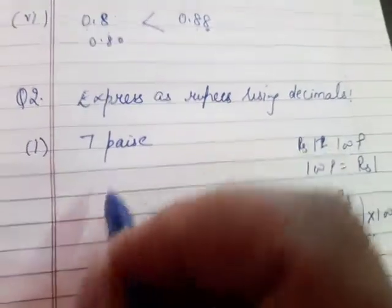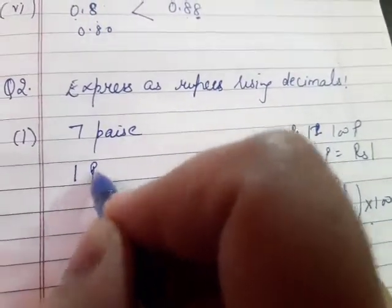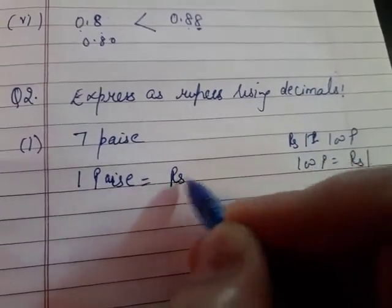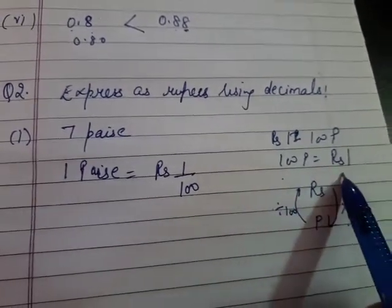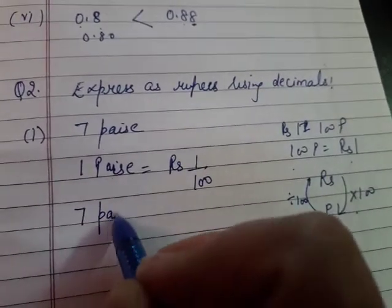So here is seven payasas. So one rupee has one hundred payasas. One payasas me kitne rupees honge? That is one by hundred. One hundred payasas me one rupee hota hai. So one payasa me kitne rupees honge? One by hundred. Toh seven payasas me kitne ho jayenge?